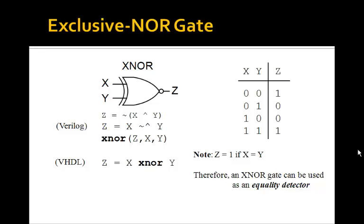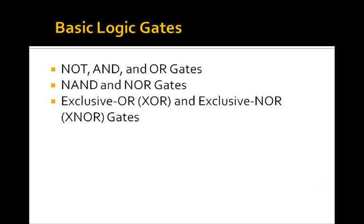Looking at the truth table again, notice that the output Z is 1 if X and Y are both 0 or both 1 — that is, if X is equal to Y. Therefore, we can use an XNOR gate as an equality detector to detect when the two inputs are equal. So in this lesson, we've learned the truth tables for NOT, OR, AND, NOR, and the exclusive OR and exclusive NOR gates.